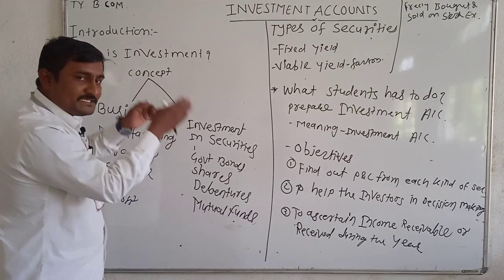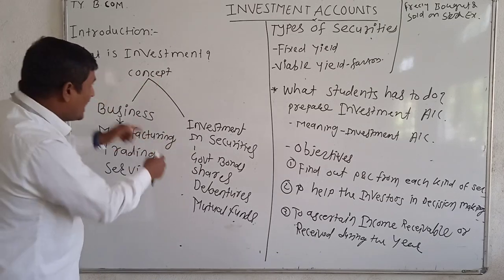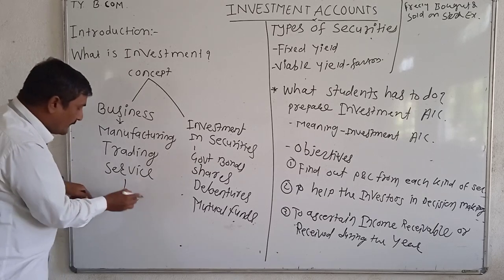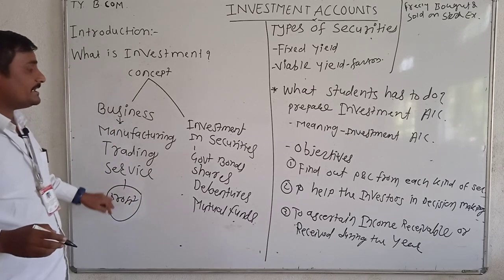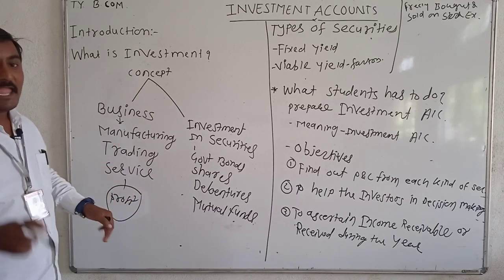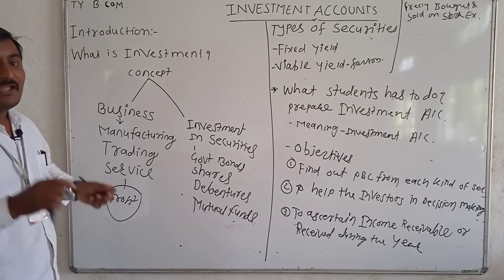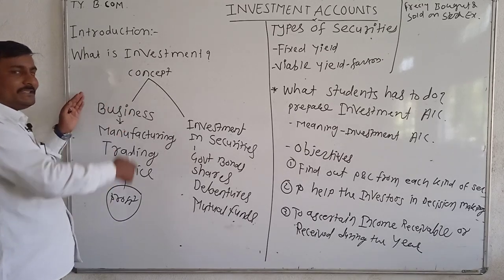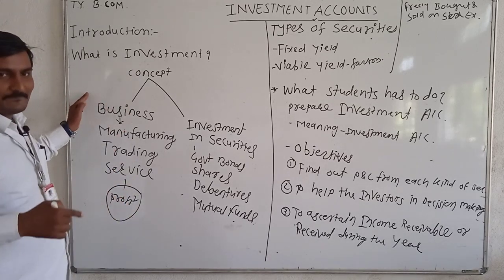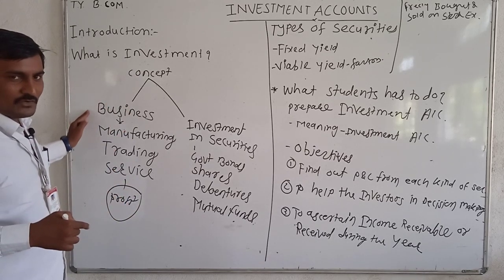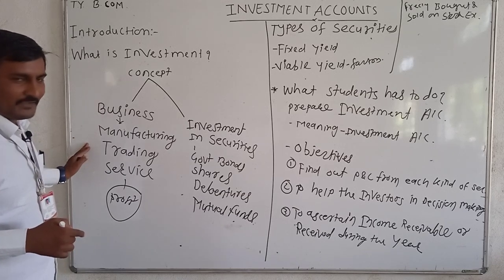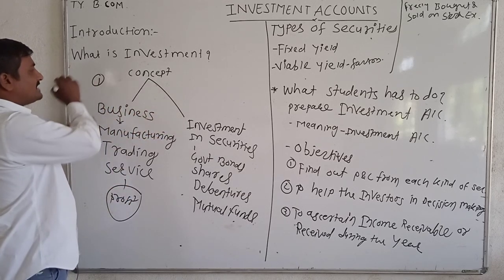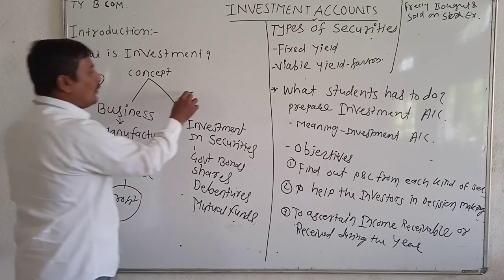After investing money into these types of businesses, the entrepreneur or businessman enjoys profit. For that, we prepare financial accounts: the trading account, profit and loss account, and balance sheet. That is the first angle.